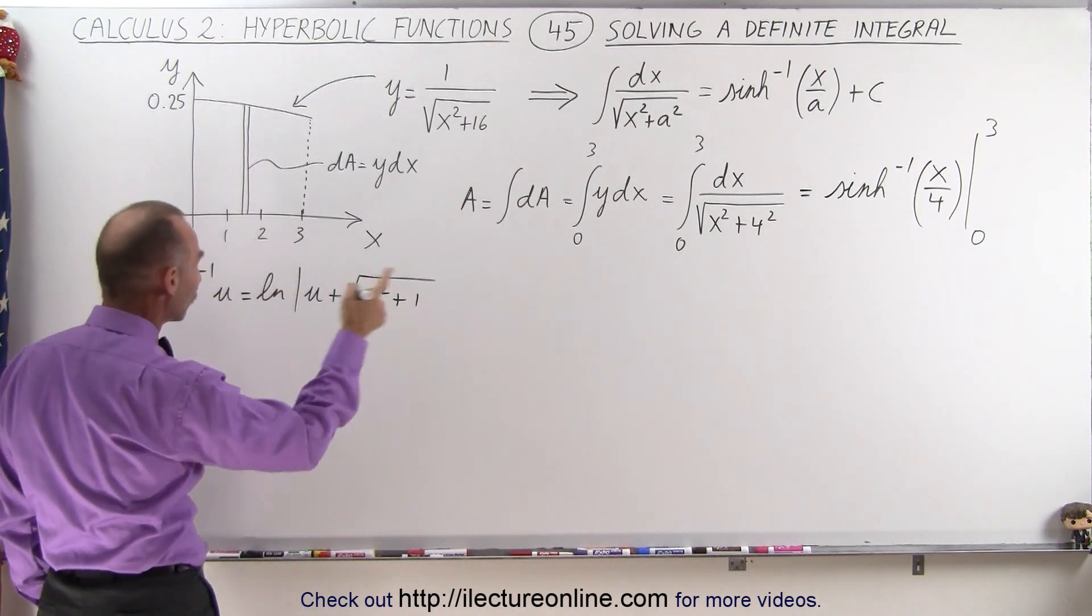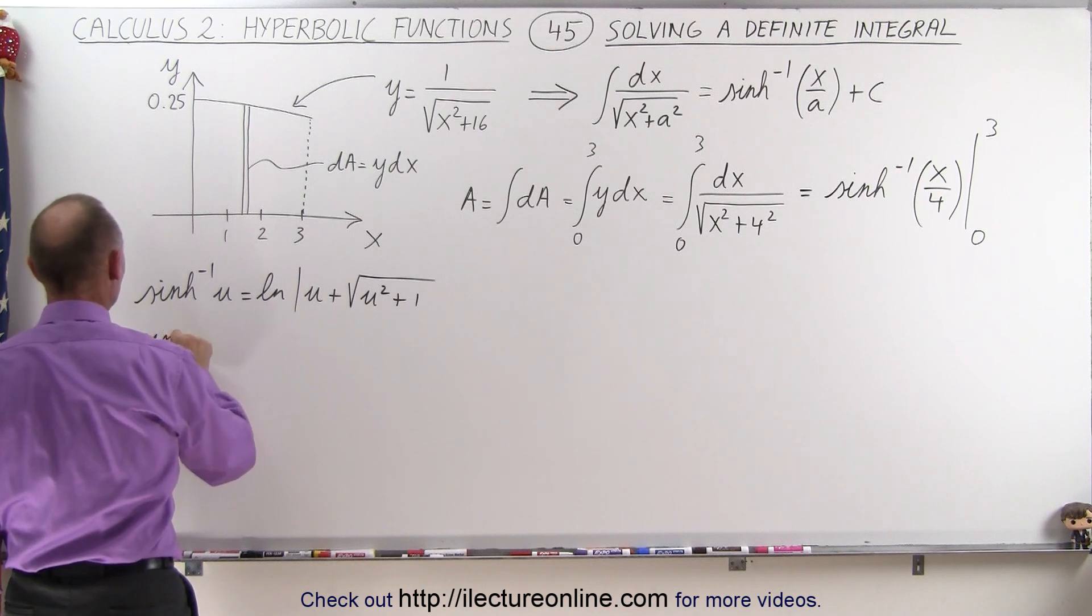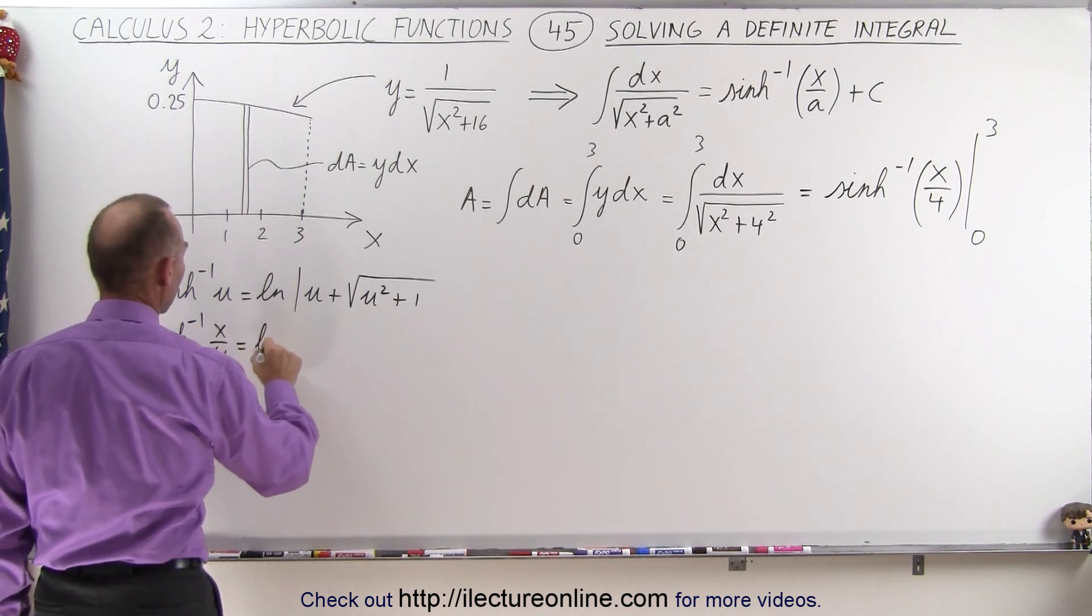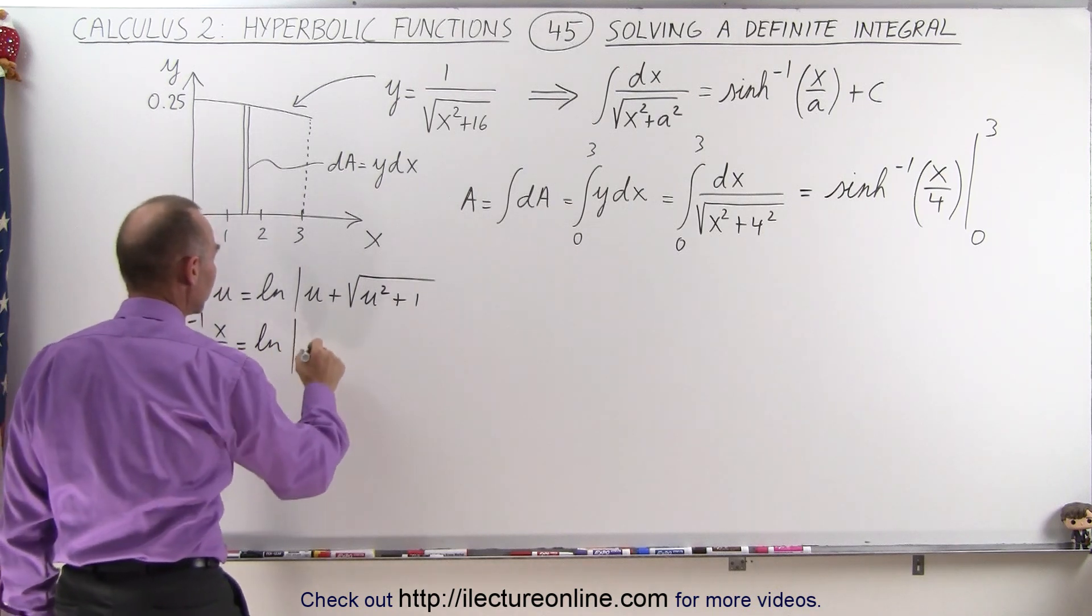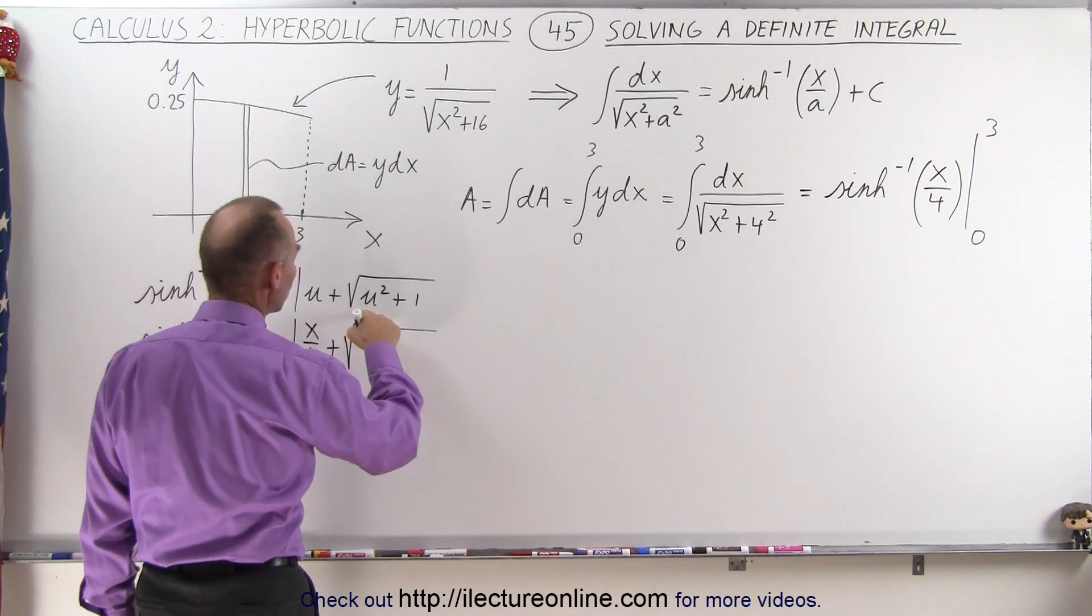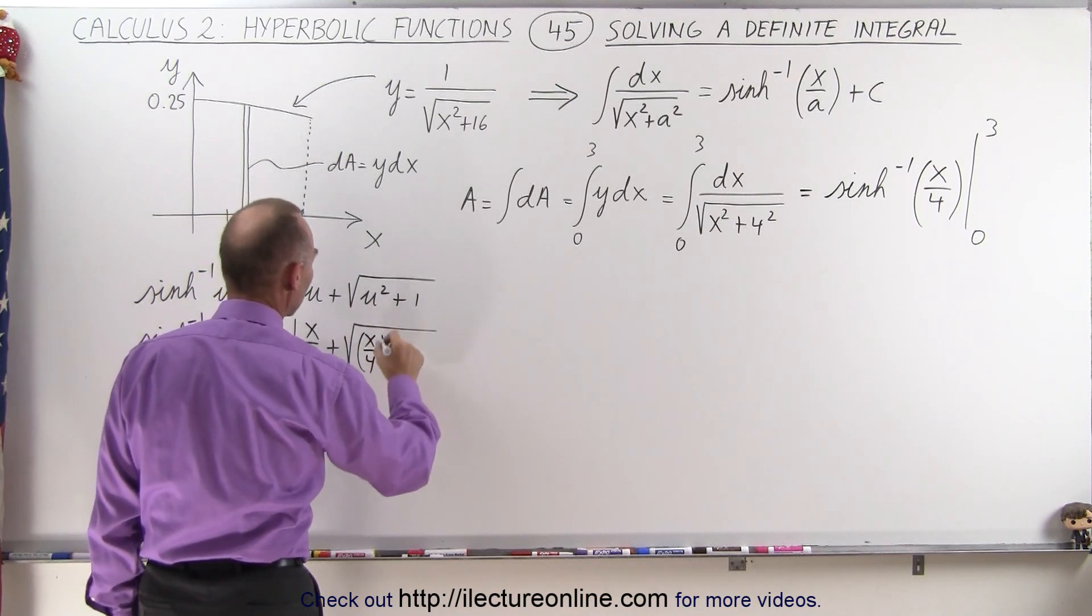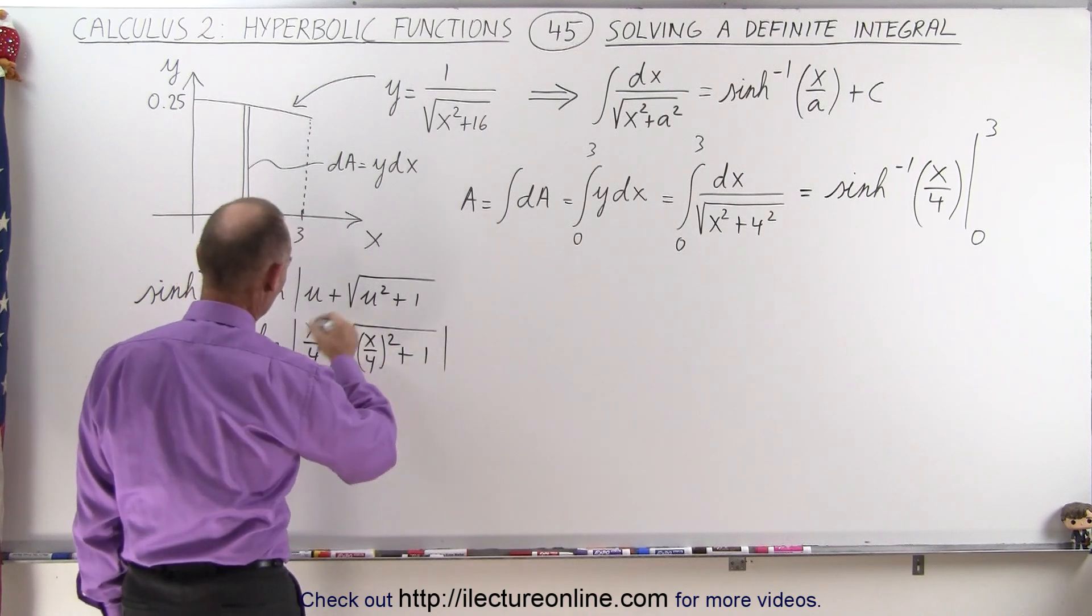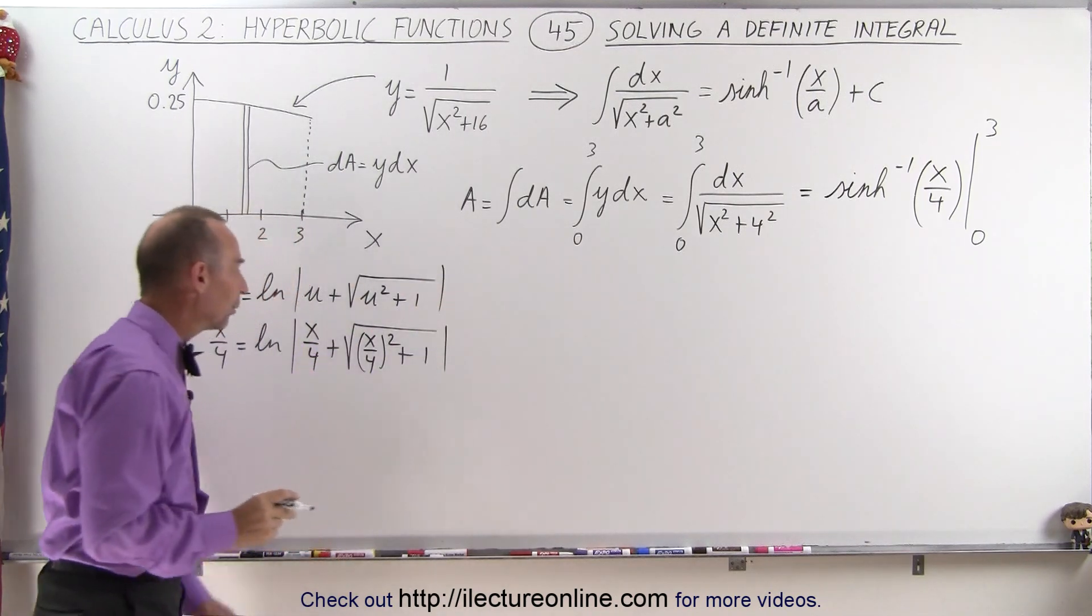Now, if instead of u we have x over 4, we can then say that the inverse hyperbolic sine of x over 4 is equal to the natural log of u will now become x over 4 plus the square root of u squared will be x over 4 quantity squared plus 1, or we could put parentheses around it either way.